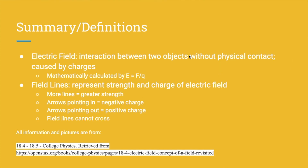Let's go over what we just learned. An electric field is an interaction between two objects without physical contact, and it's caused by charges. It's mathematically calculated by E equals force of the field over Q, the positive test charge. Field lines represent the strength and charge of the electric field. More lines means greater strength. If the arrows are pointing in, it's a negative charge; pointing out means a positive charge. And field lines cannot cross.